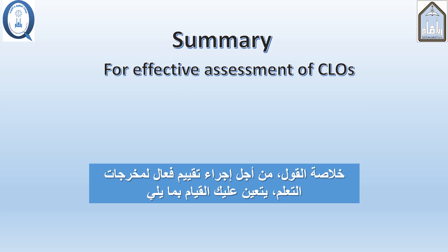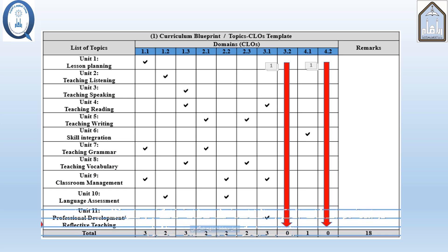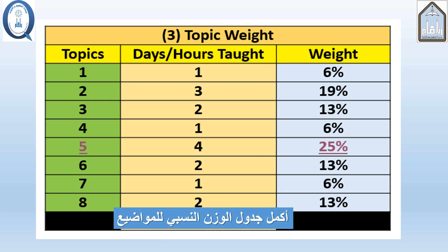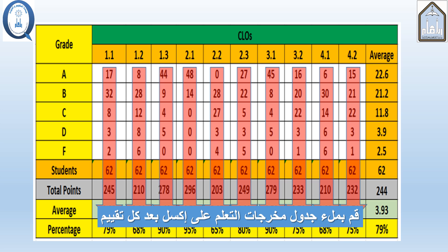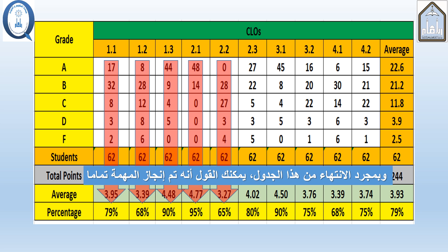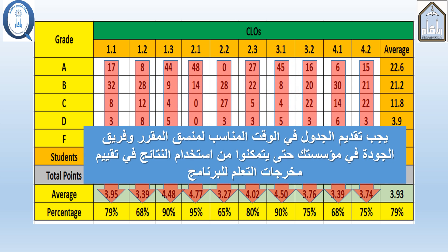To wrap things up, for effective assessment of CLOs, you need to do the following: study your course specifications very carefully in line with the textbook and what it really offers; complete the curriculum table; complete the assessment table; complete the topic weight table; think of proper assessments of the CLOs; and fill in the CLOs table in Excel after each assessment. Once you have this table completed, you can say the job is perfectly done. The table should be submitted in time to the course coordinator and the quality team in your institution, so they can use the results in the assessment of the program learning outcomes.